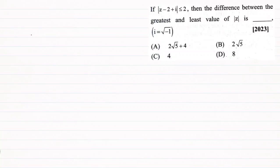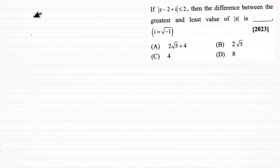Given that the modulus of z minus (2 plus i) is less than or equal to 2, find the difference between the greatest and least value of modulus of z. Here z is a complex number, written as x plus iy, and mod z is the modulus of z.